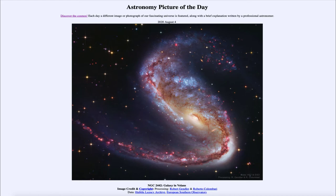Today's picture for August the 4th of 2020 is titled NGC 2442 Galaxy in Volans. So what do we see here? Well, this is an image of a galaxy, a type of galaxy known as a barred spiral.